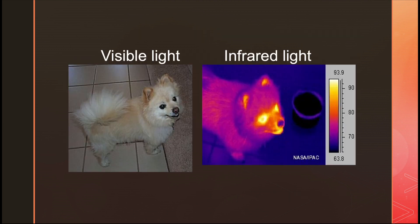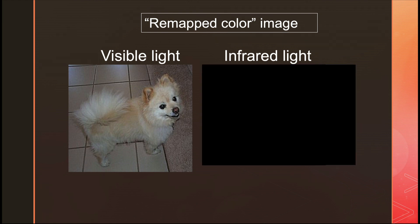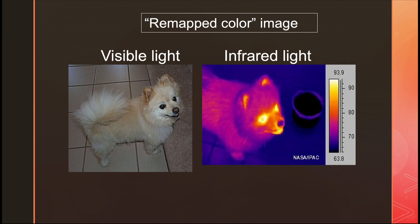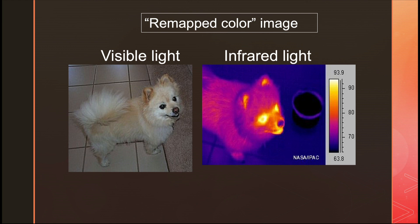Here's a little dog seen on the left in visible light and on the right in infrared light. There are two really important things to note. First, this is a false-color — or better, remapped-color — image, because I've taken the wavelengths of infrared light and translated them into wavelengths we can see. Our eyes don't see infrared light, so a true-color infrared image would be really boring. Remapped color is a truer representation of what's going on.